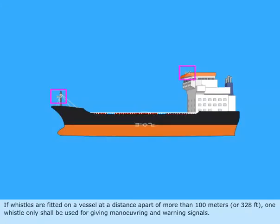If whistles are fitted on a vessel at a distance apart of more than 100 meters or 328 feet, one whistle only shall be used for giving maneuvering and warning signals.